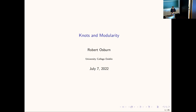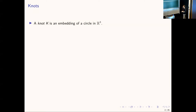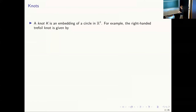I want to start very gently because I'm trying to make this as broad as possible. First of all, what are knots? Informally, you take a piece of string, twist it and turn it in any way you like, and then you fuse the ends. More formally, a knot is an embedding of a circle into R3, or three-space. A common way of representing a knot is via a planar diagram — you take the knot in three-space and project it down to the plane.